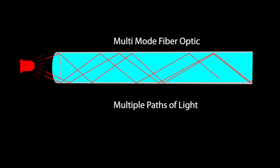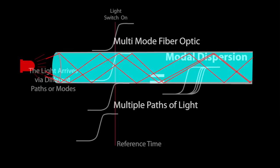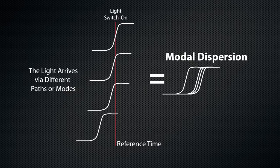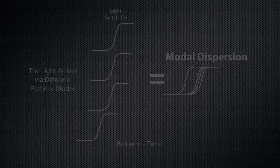These multiple modes, or paths, cause the light to travel different distances. Distance traveled equals time, so the light from different paths arrive at the receiver at different times. This distorts the light signal, causing sharp edges to spread out over the time it takes for all the light paths to converge at the receiver. This distortion is called modal dispersion and limits the distance over which multi-mode fiber can be used.